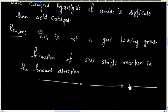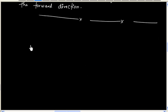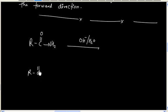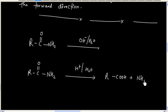This is base-catalyzed hydrolysis of amide. If you have amide, you can do base-catalyzed hydrolysis or acid-catalyzed hydrolysis. In case of acid, you will get acid plus ammonium ion NH4+. In case of base-catalyzed, you will get salt of acid plus ammonia.